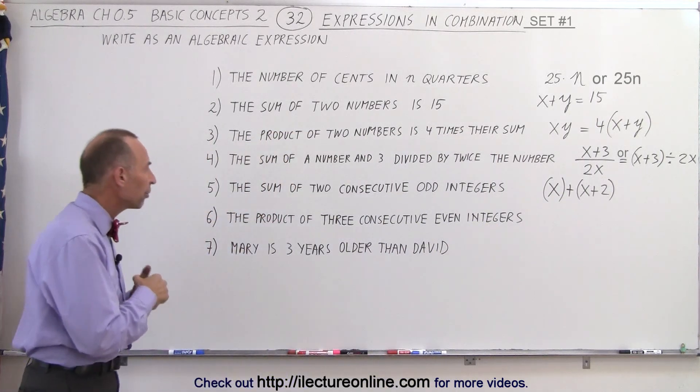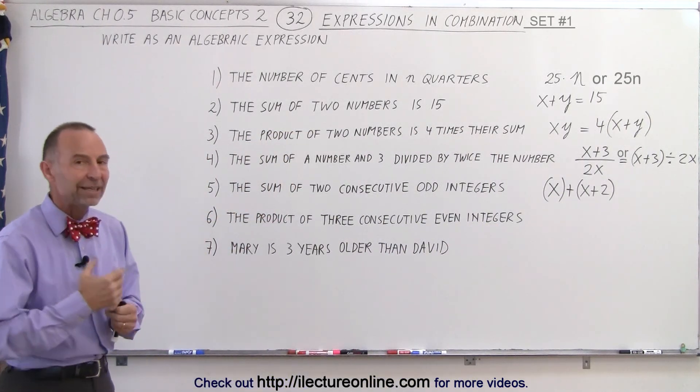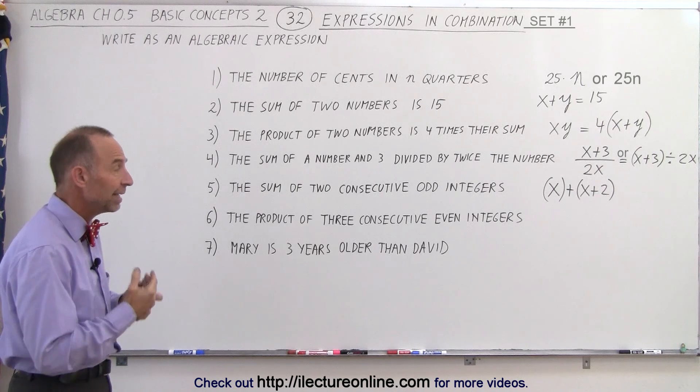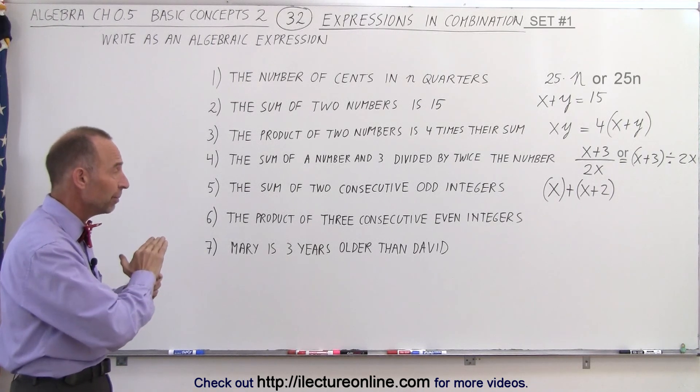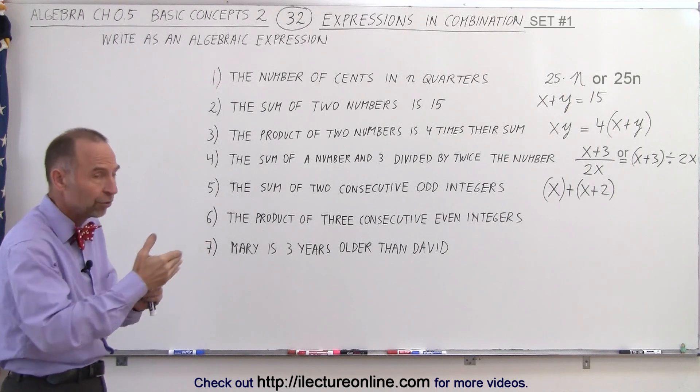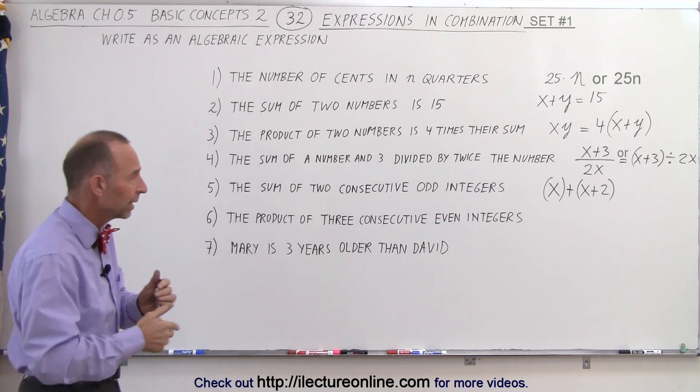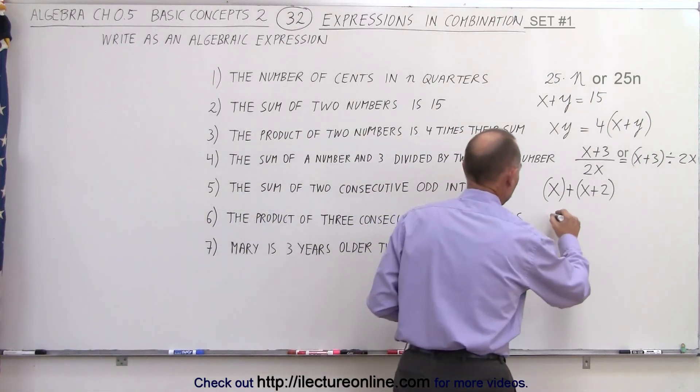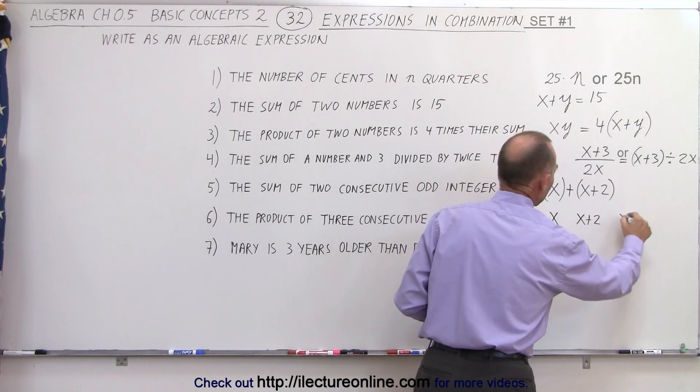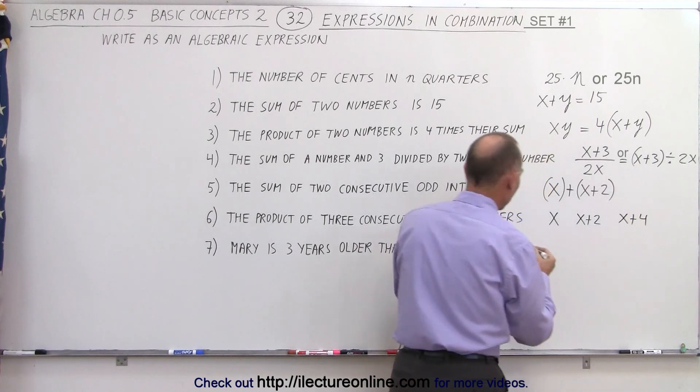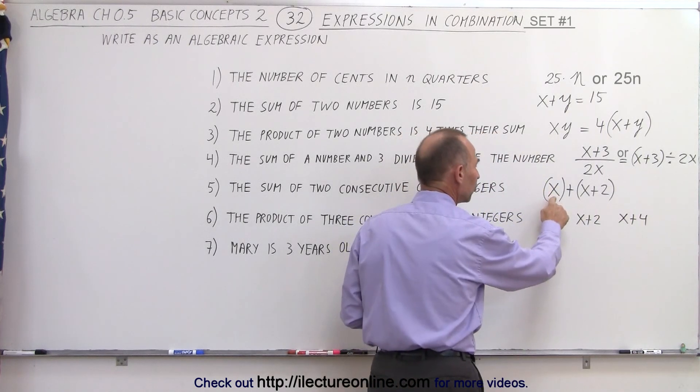Next we read the product of three consecutive even integers. Well, even integers, just like odd integers, are always two apart. There's three of them. They're consecutive, so we take the smallest one and let it equal x. The next one would be x plus two, and the next one would be x plus four.